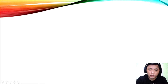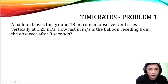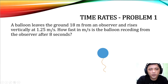Once we master the technique we'll solve more complicated ones. Our first problem: a balloon leaves the ground 18 meters from an observer and rises vertically at 1.25 meters per second. How fast in meters per second is the balloon receding from the observer after eight seconds? Receding means to move away from an object or observer.